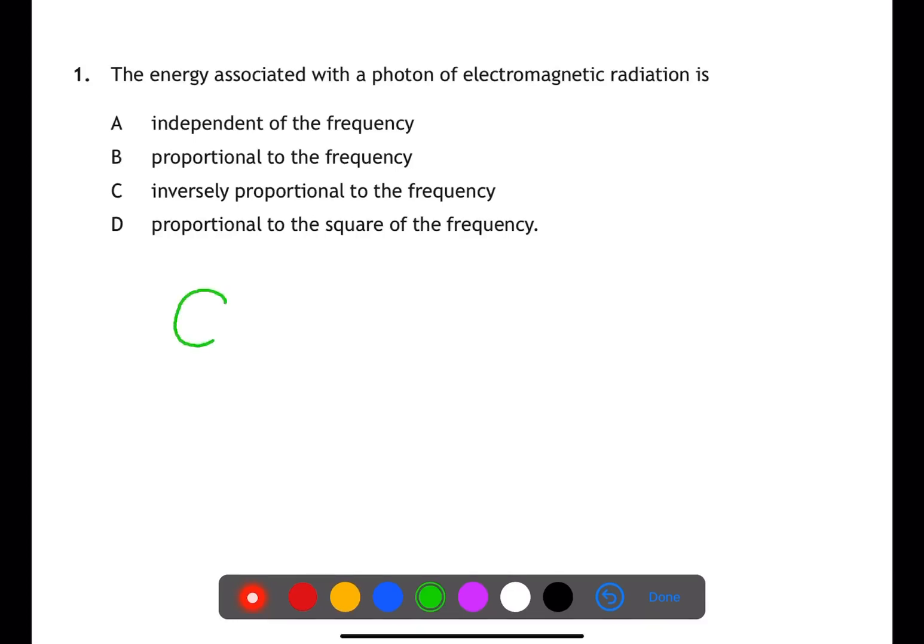For question one, the energy associated with a photon of electromagnetic radiation is what? At the front of your data book you have the equation E equals HF. This means that energy is proportional to frequency.